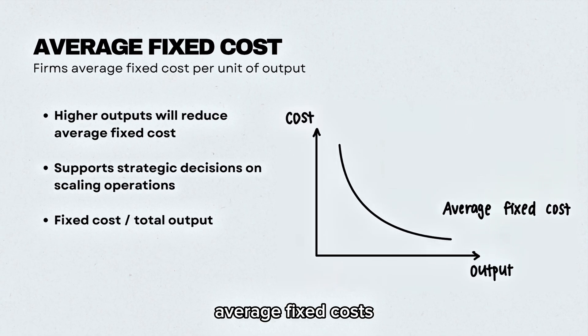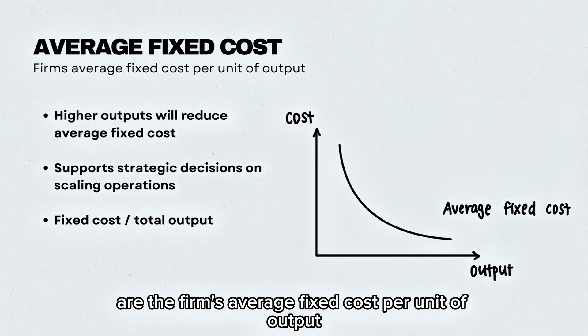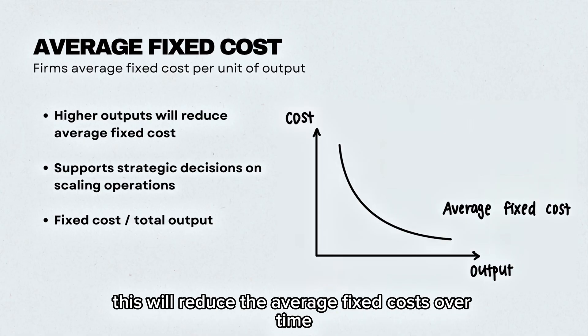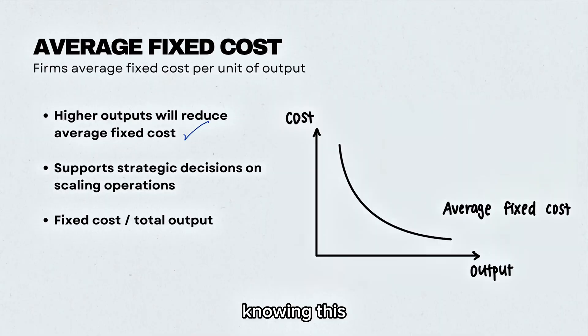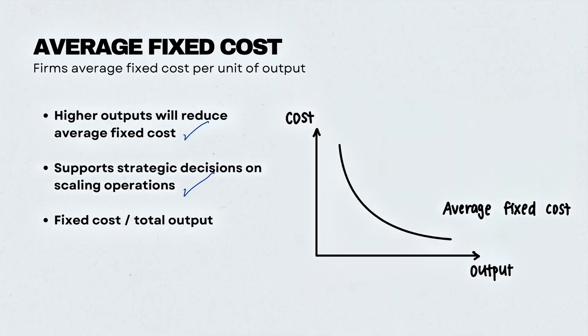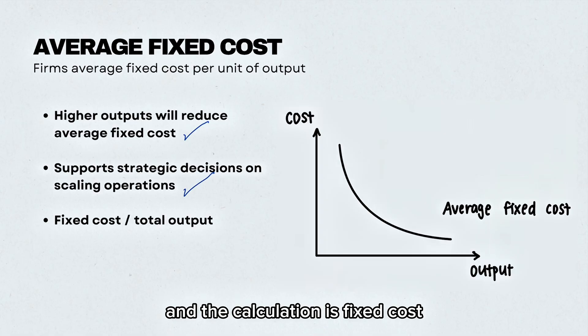Average fixed costs are the firm's average fixed cost per unit of output. The higher the output, the lower the average fixed costs over time. Knowing this will support strategic decisions around scaling operations. The calculation is fixed costs divided by the total output.